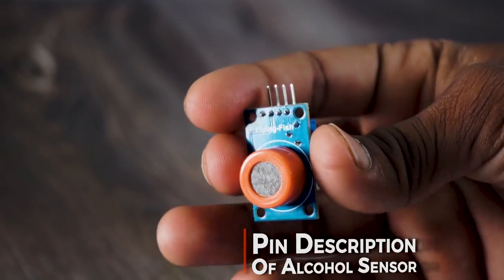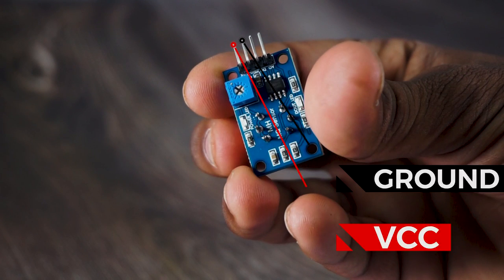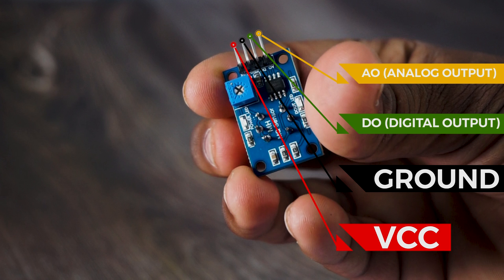So let's see the pin description of this sensor. It has four useful pins: VCC, GND, A0 and D0. A0 and D0 is basically analog output and digital output.